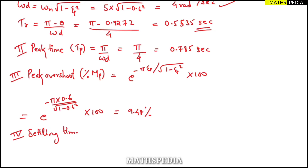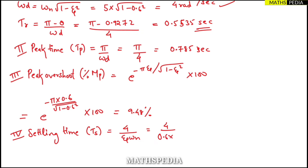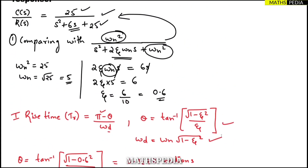Settling time t_s = 4 / (zeta · omega_n). Substituting zeta = 0.6 and omega_n = 5 gives t_s = 4 / (0.6 × 5) = 1.33 seconds.